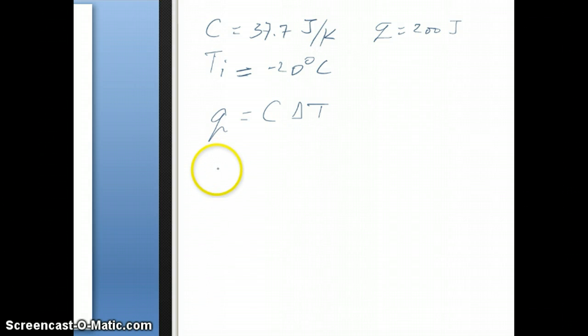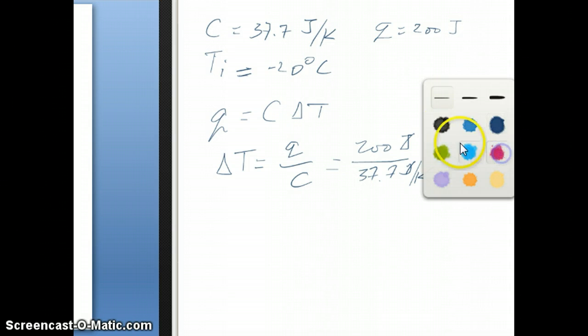I can just solve for delta T, which will be 200 joules over 37.7 joules per Kelvin. You notice that the units cancel out nicely, the joules cancel, leaving you with an answer just in Kelvin. And that answer is 5.3 Kelvin.